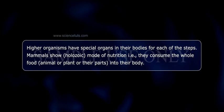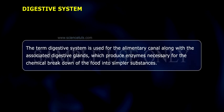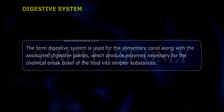In holozoic nutrition, mammals consume whole food — animal or plant, or their parts — into their body. The term digestive system is used for the alimentary canal along with associated digestive glands, which produce enzymes necessary for the chemical breakdown of food into simpler substances.